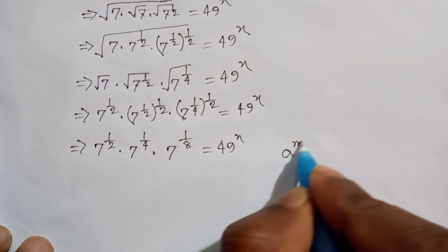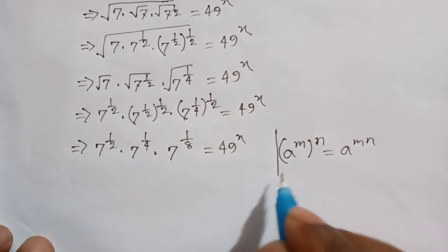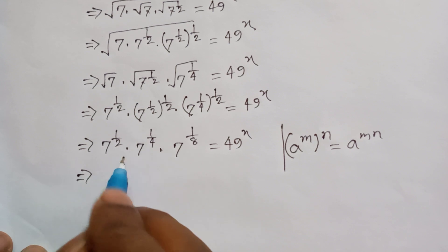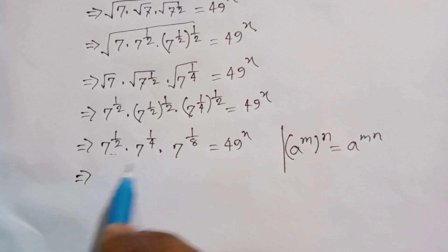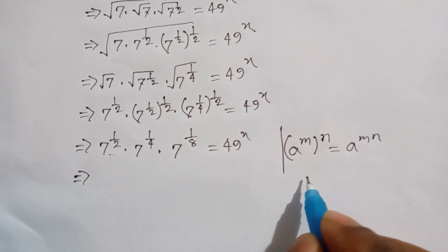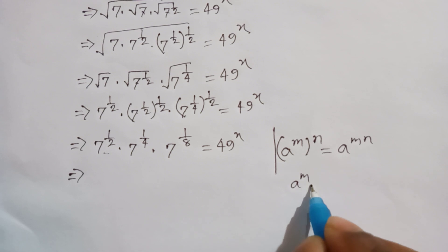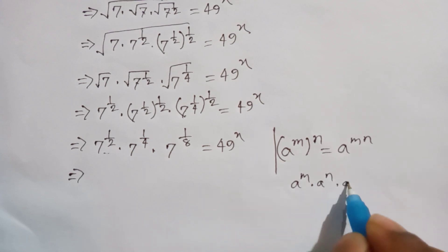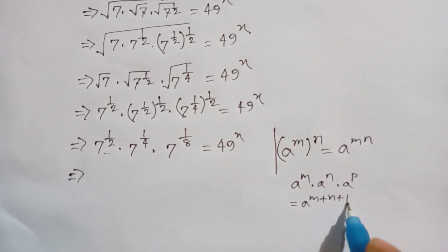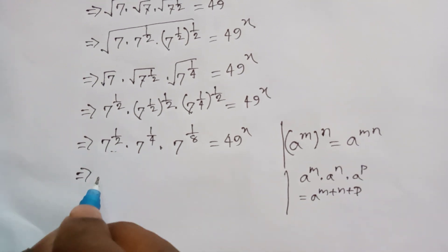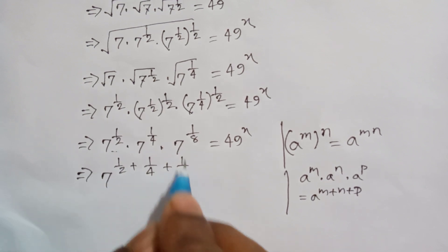The formula is: a to the power m, whole to the power n, is equal to a to the power mn. If we look, this base is the same, so we can write this according to the formula: a to the power m times a to the power n times a to the power p, is equal to a to the power m plus n plus p. So it can be written as 7 to the power 1 by 2 plus 1 by 4 plus 1 by 8, is equal to 49 to the power x.